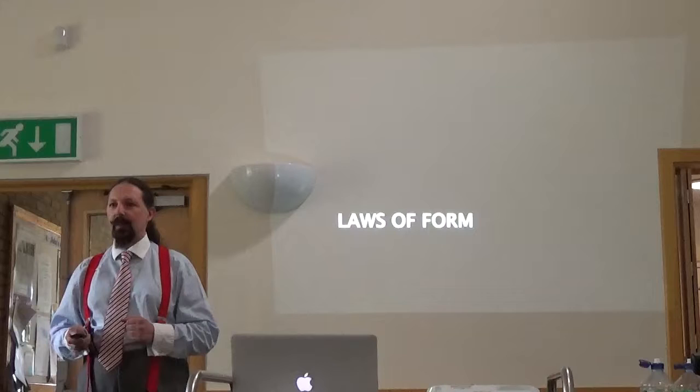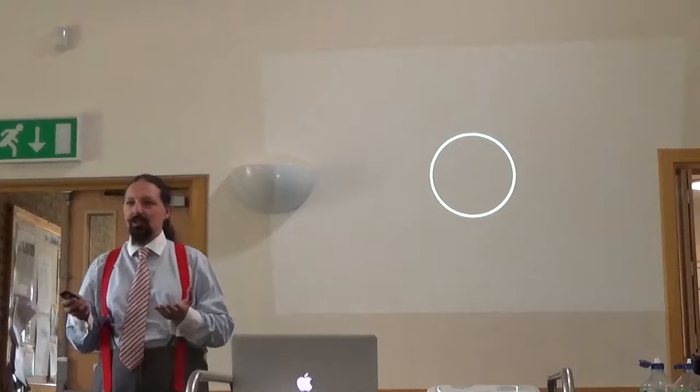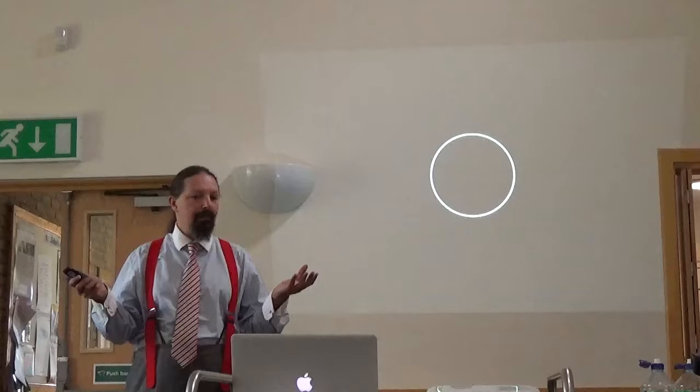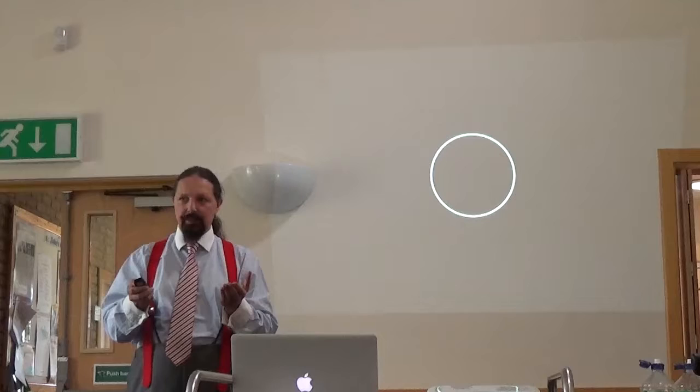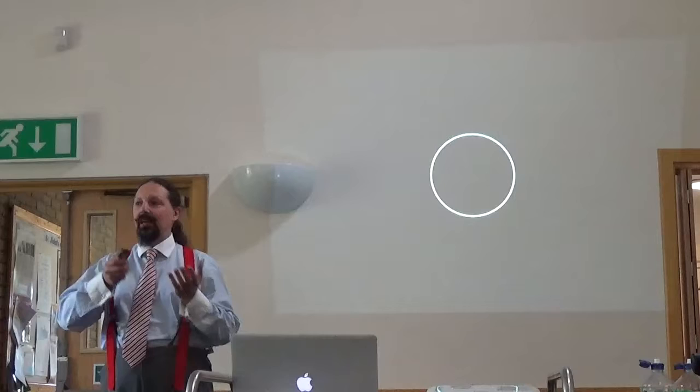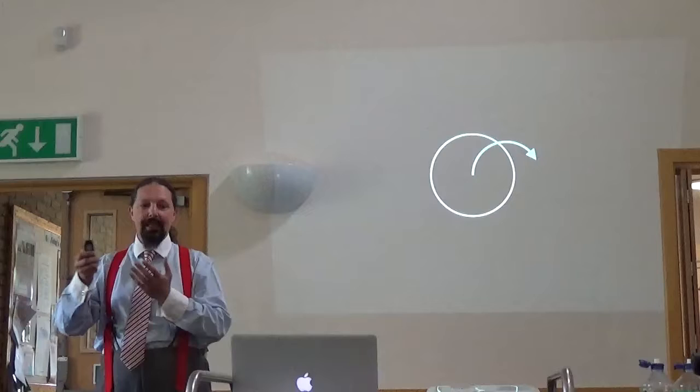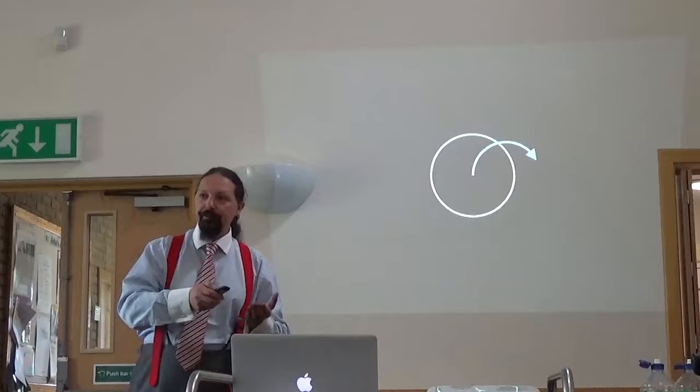Let's go to Laws of Form. Laws of Form starts in the void, from which there emerges, and in which there appears, a distinction — which Spencer Brown calls the first distinction — which can be symbolised as a circle suspended in some kind of space. That allows an inside, an outside, and a border to be defined. And once that has happened, it allows acts of crossing, which can take place either from the inside to the outside, or from the outside to the inside.